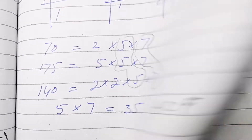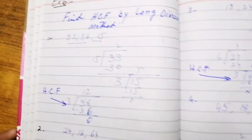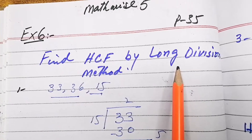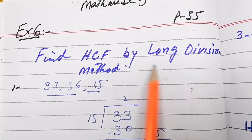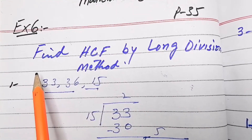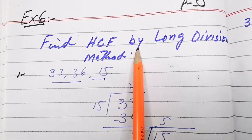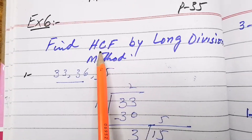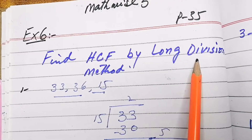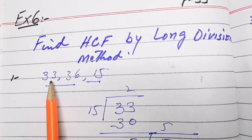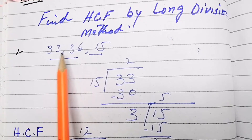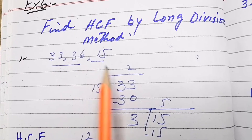Now Exercise 6 again — this time I have done it by the long division method. This is the same Exercise 6. First I did it by prime factorization method to find HCF; now here we will do the long division method. Same exercise, question number 1: 33, 36, and 15 are given.